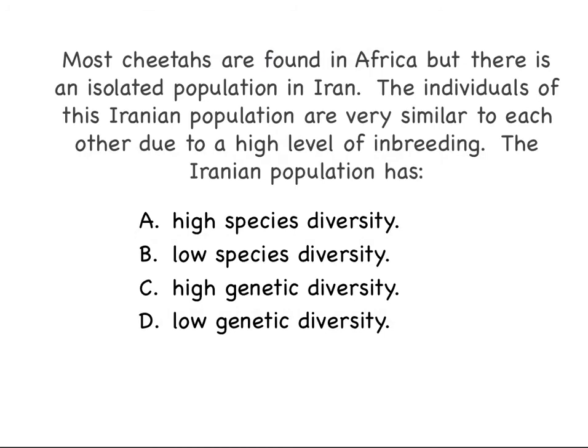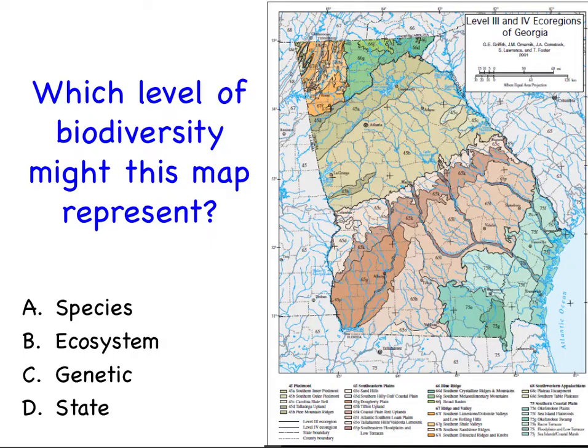Most cheetahs are found in Africa, but there is an isolated population in Iran. The individuals of this Iranian population are all very similar to one another due to high levels of inbreeding. Does this Iranian population have high species diversity, low species diversity, high genetic diversity, or low genetic diversity? This is a map of Georgia showing different kinds of habitats defined by the forests, climate, and geology of each of the colored regions. Which level of biodiversity might this map represent — species, ecosystem, genetic, or state level biodiversity?